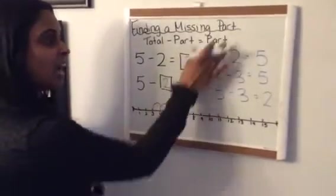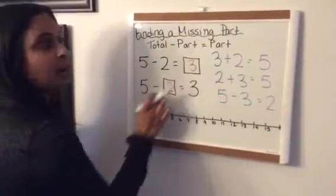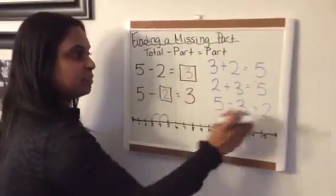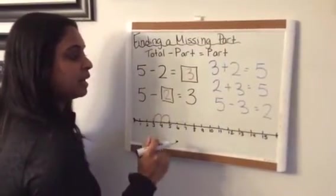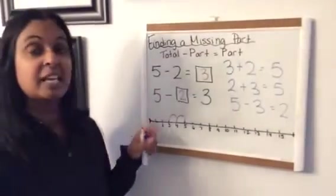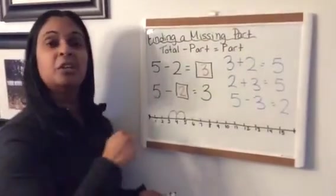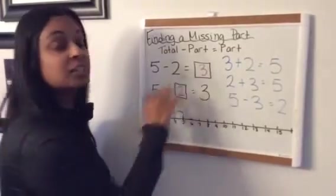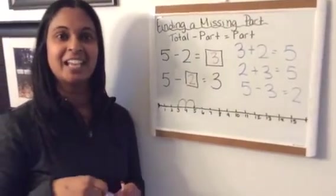So if I think about my fact families, I might already know the numbers that go in those boxes because fact families are using the same three numbers each time. So you can use fact families to help you, or you can use punching out and counting up to get your missing parts when you're doing a subtraction sentence. Have fun today.